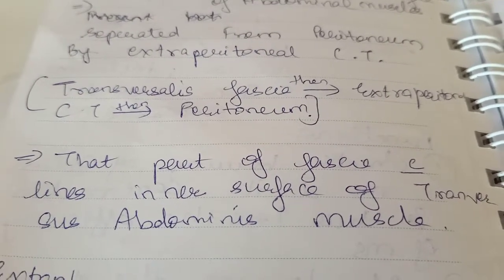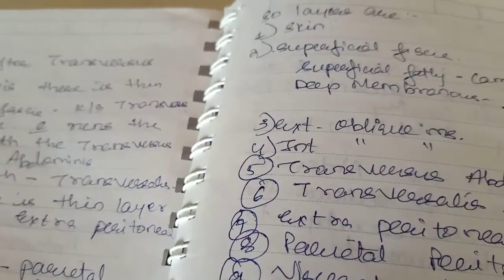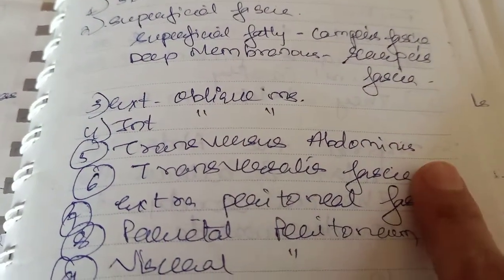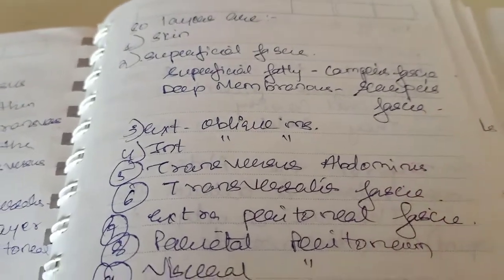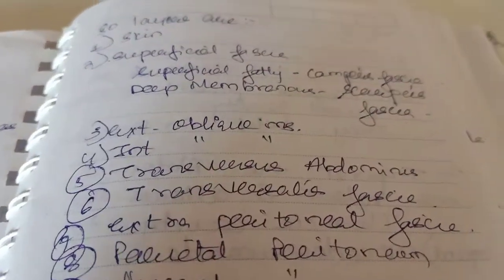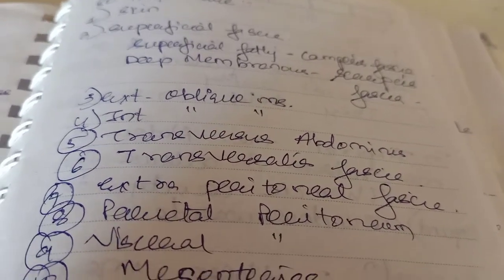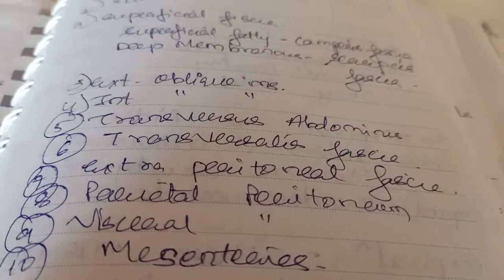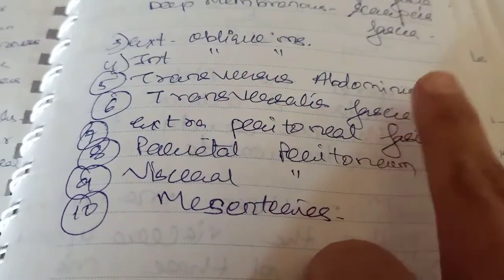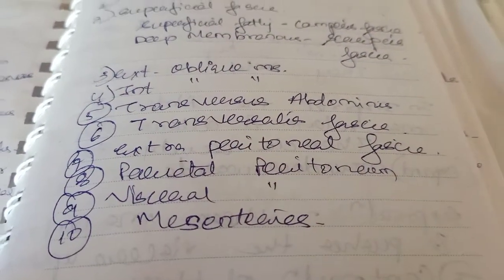It is the deep part of the fascia which lines the inner surface of the transversus abdominis muscle. When you dissect, the skin gets dissected first, then superficial fascia, then external oblique, then internal oblique, and then transversus abdominis. This fascia is very close to and lines the transversus abdominis muscle.